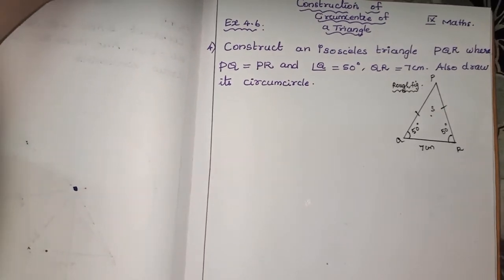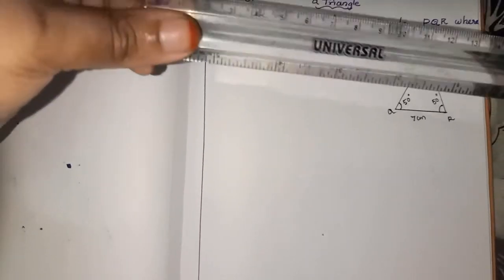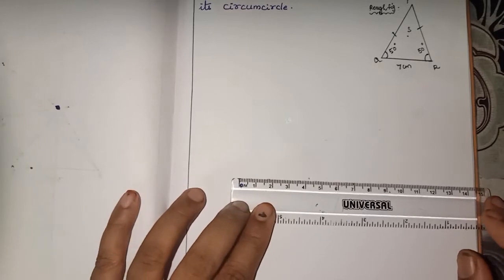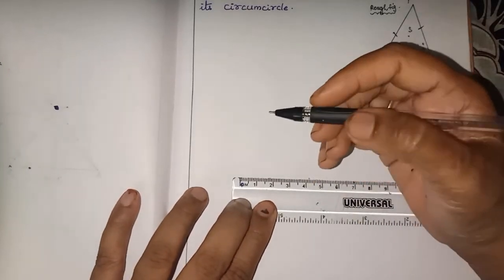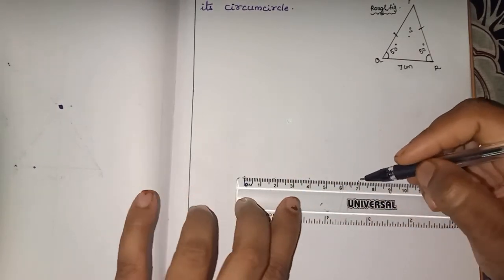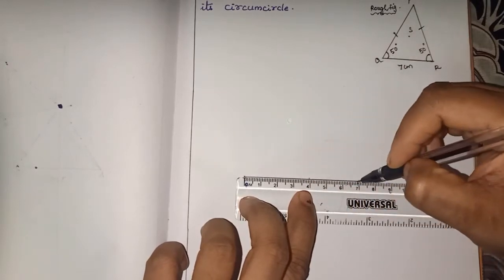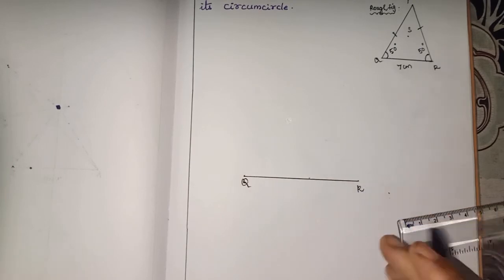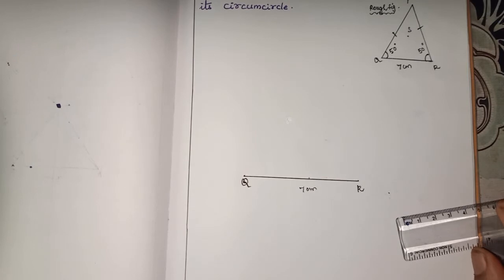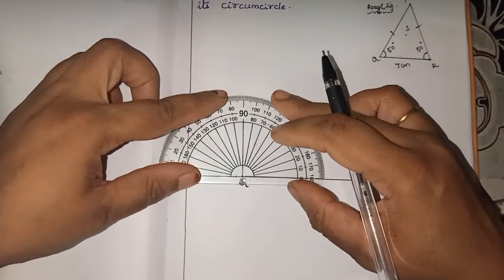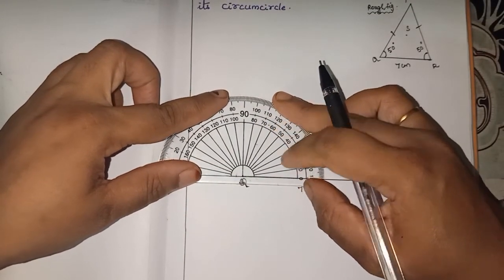Now I am going to do main construction. So how to construct. First isosceles triangle. Now I am going to take the base QR 7 cm. 7 cm when I am going to measure the base. So QR is our base is ready, 7 cm.